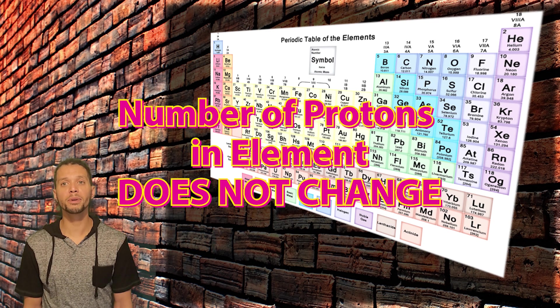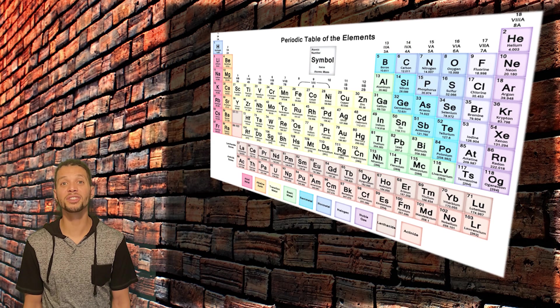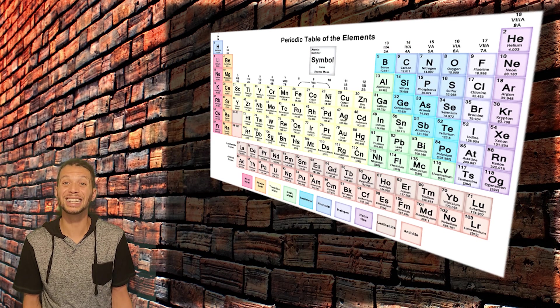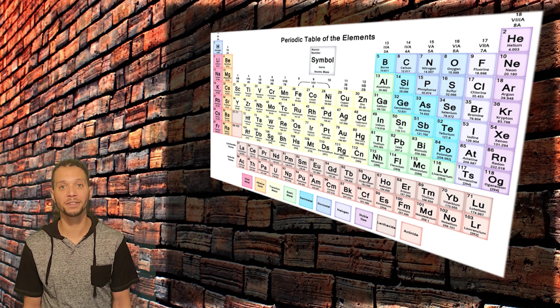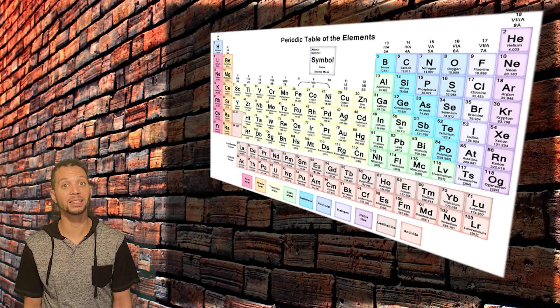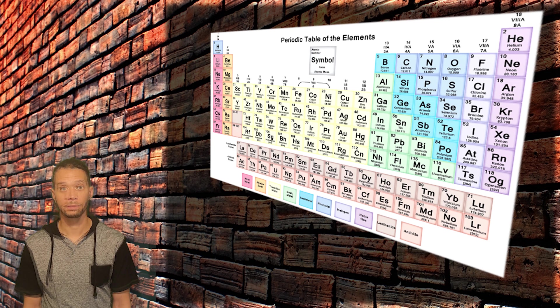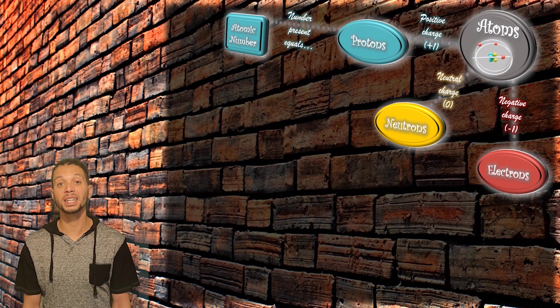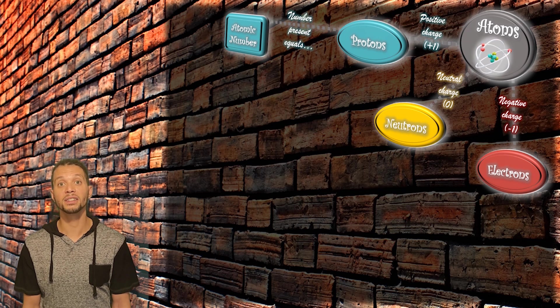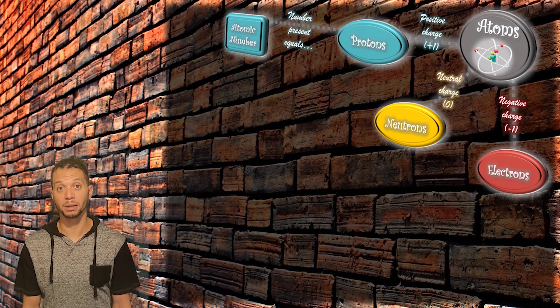So the number of protons in an atom gives that atom its unique identity, and this number is what we use to arrange the different atoms on the periodic table of elements. Because of this, the number of protons present in an atom equals what is known as the atomic number of an element.